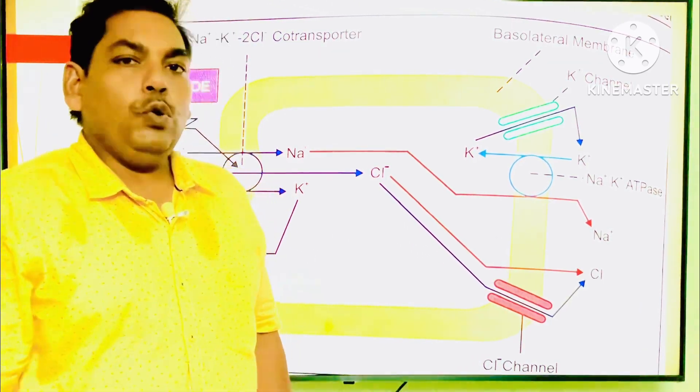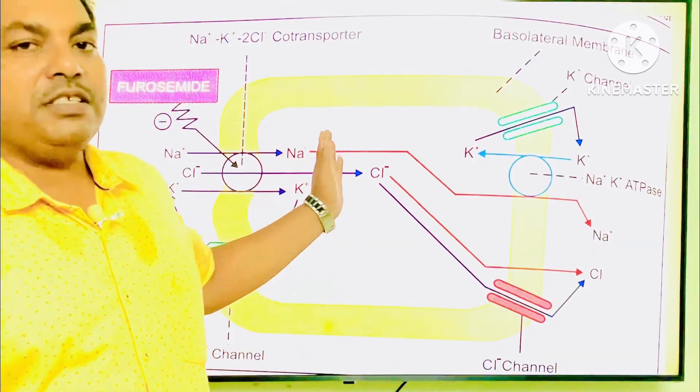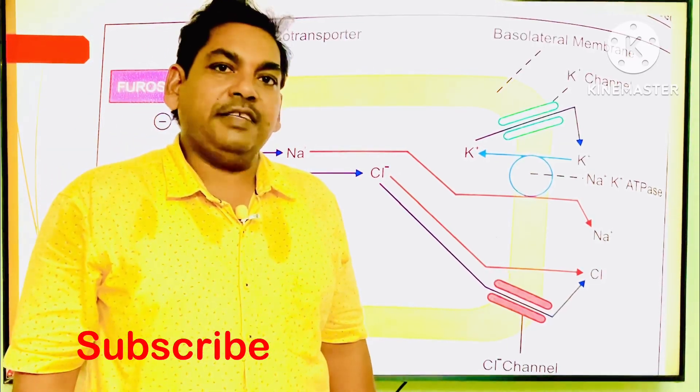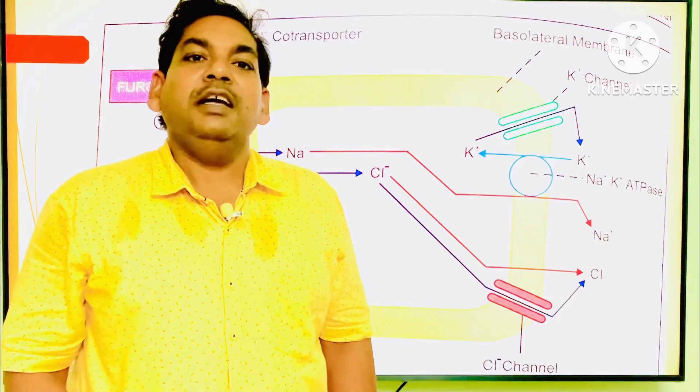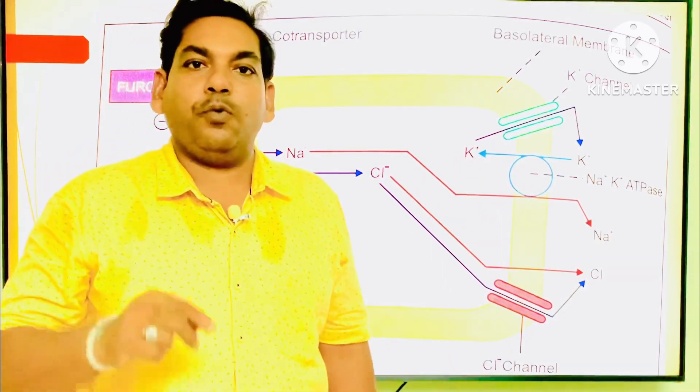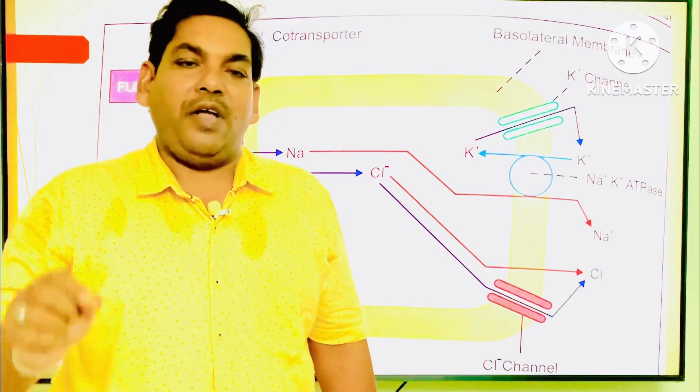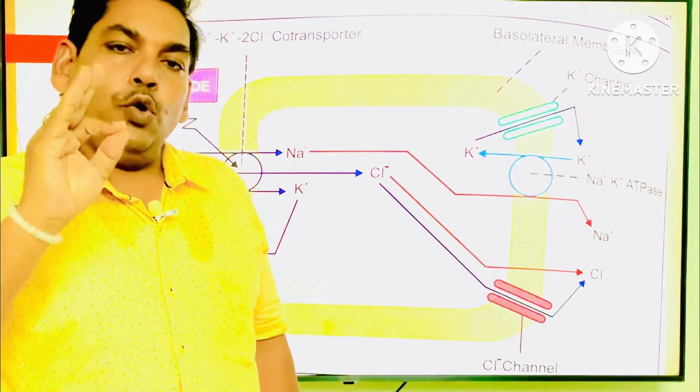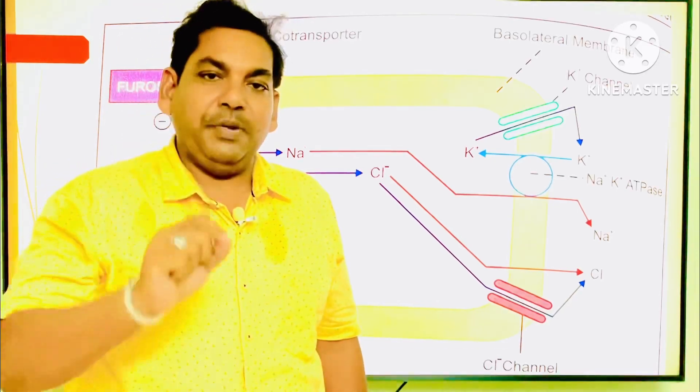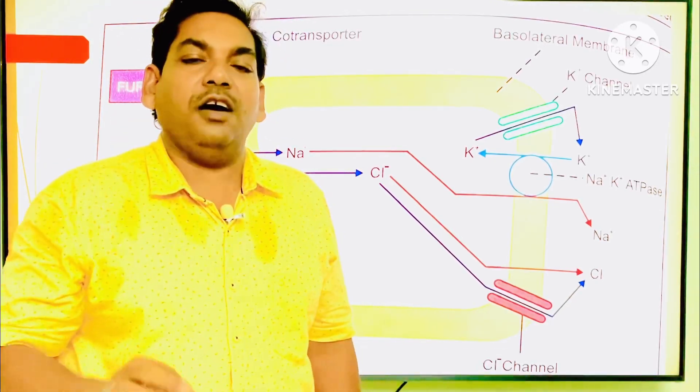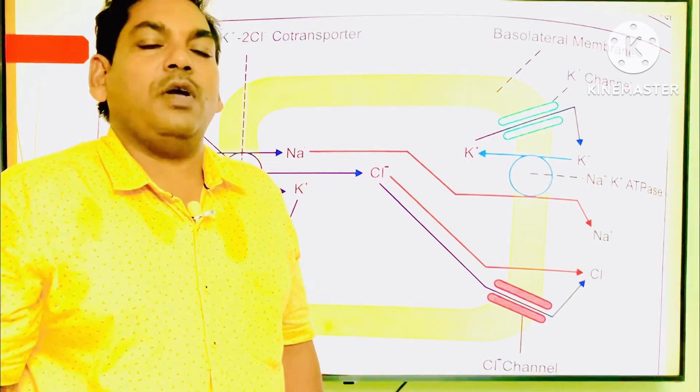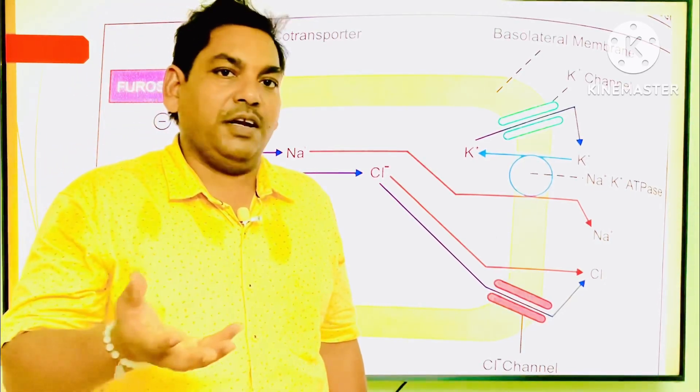The mechanism of action of loop diuretics: they act in the lumen of the ascending loop of Henle by blocking the absorption of sodium-potassium-chloride co-transporter from the lumen to the blood vessels. This accumulates sodium, potassium, and chloride in the lumen, creating a hypotonic concentration of urine.